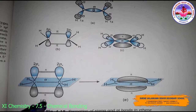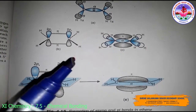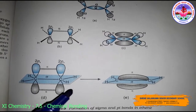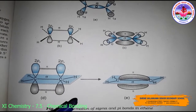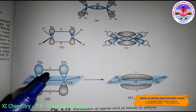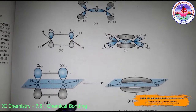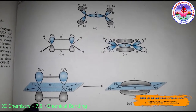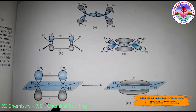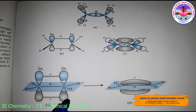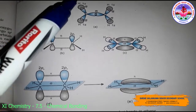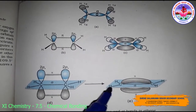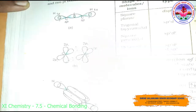The pi bond consists of two equal electron clouds distributed above and below the plane of the carbon and hydrogen atoms. The carbon–carbon bond in ethene consists of one sp2–sp2 sigma bond and one pi bond between unhybridized p orbitals perpendicular to the plane of the molecule. The C=C bond length is 134 pm, the C–H bond length is 108 pm, the H–C–H bond angle is 117.6 degrees, and the C–C–H bond angle is 121 degrees.